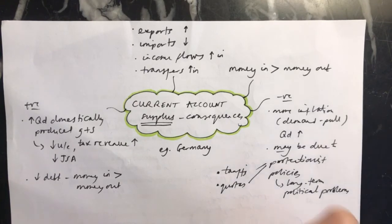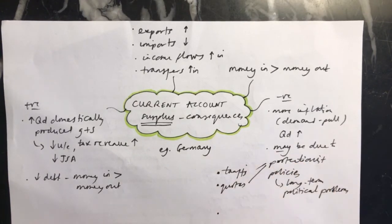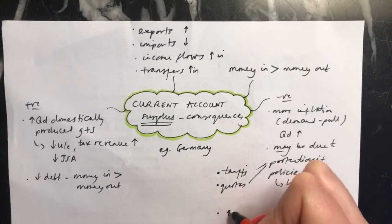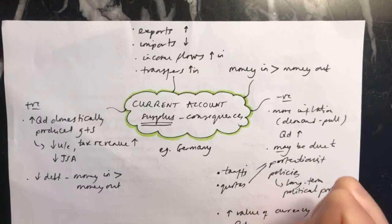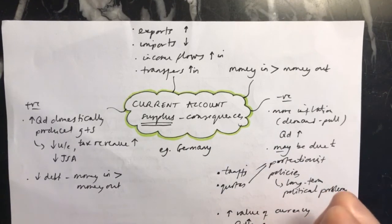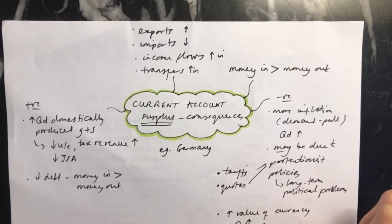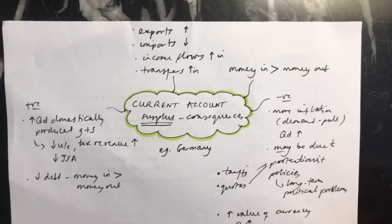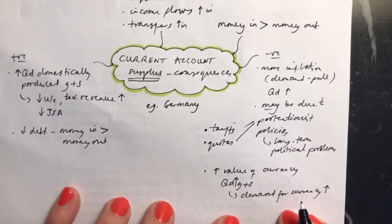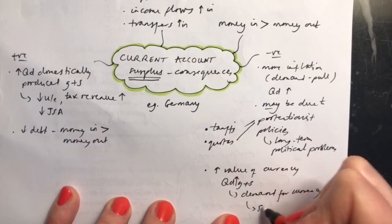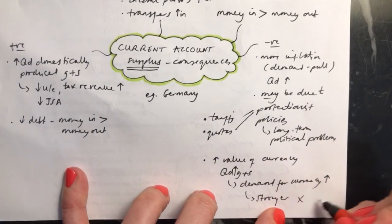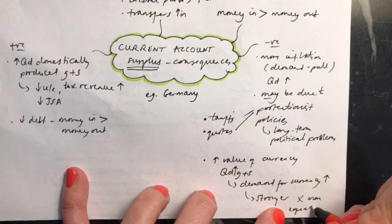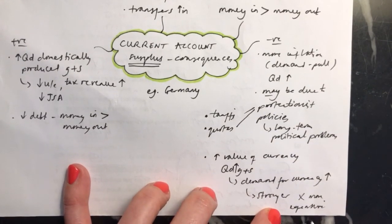Another thing that would be bad about having a surplus on your current account, finally, is that it may increase the value of your currency. As the quantity demanded of your goods and services went up, that will cause the demand for your currency to go up as well. If the demand for the currency goes up, that causes your currency to get stronger. If the currency gets stronger, then your exports are more expensive and that might make them less attractive to people abroad and less internationally competitive.